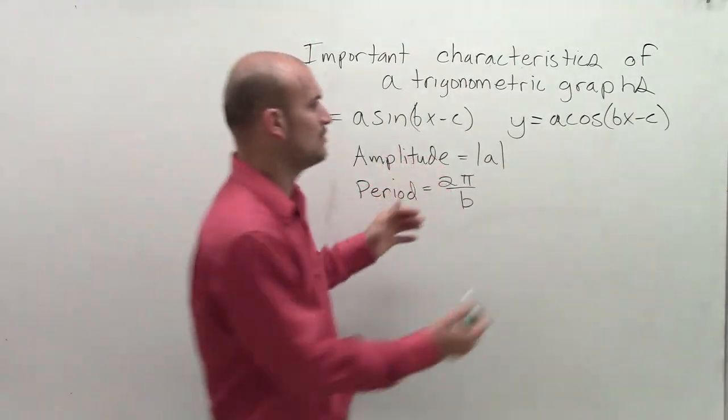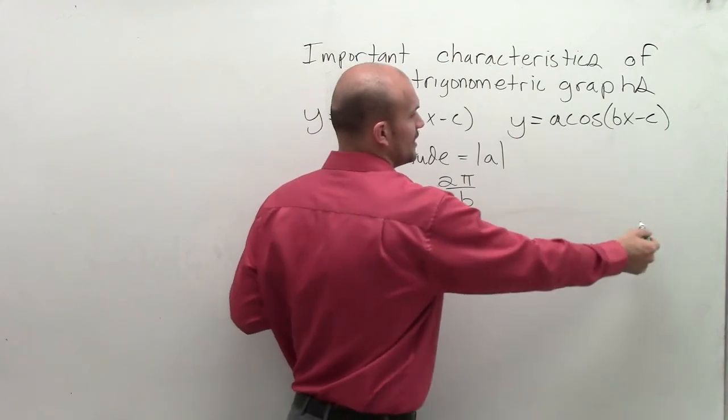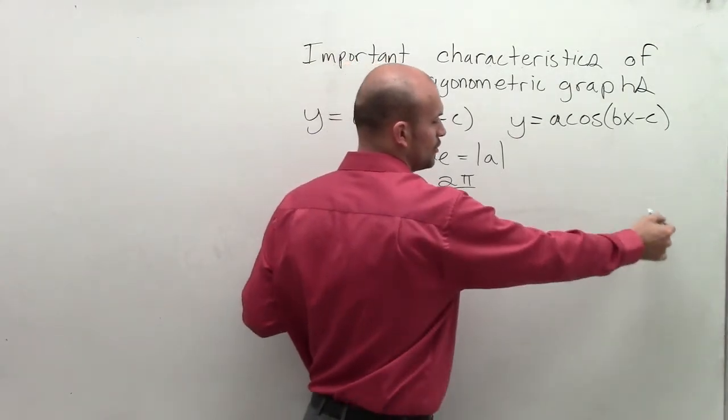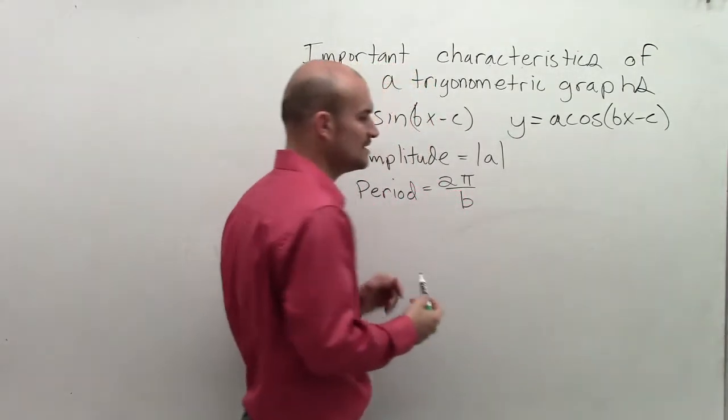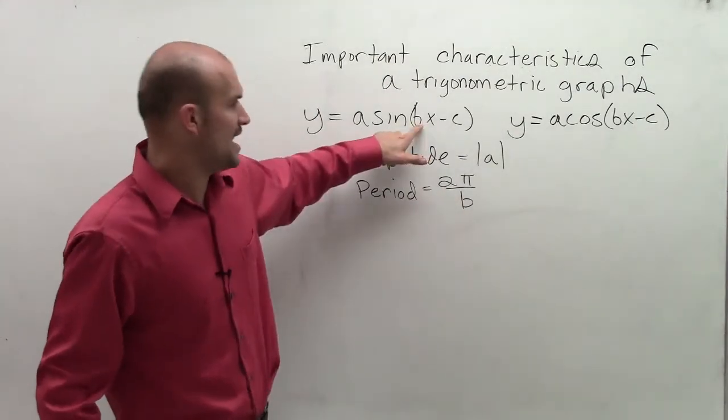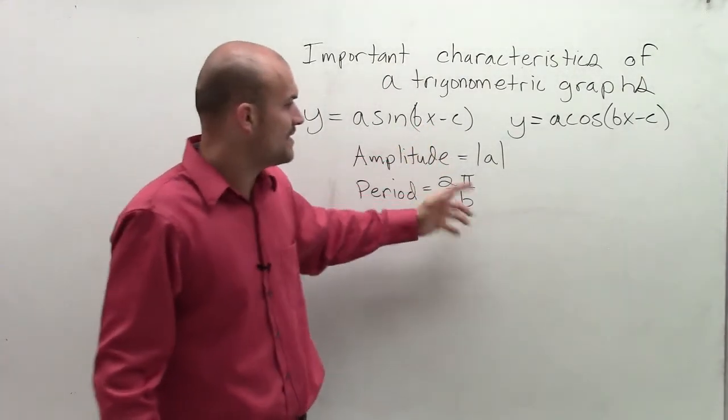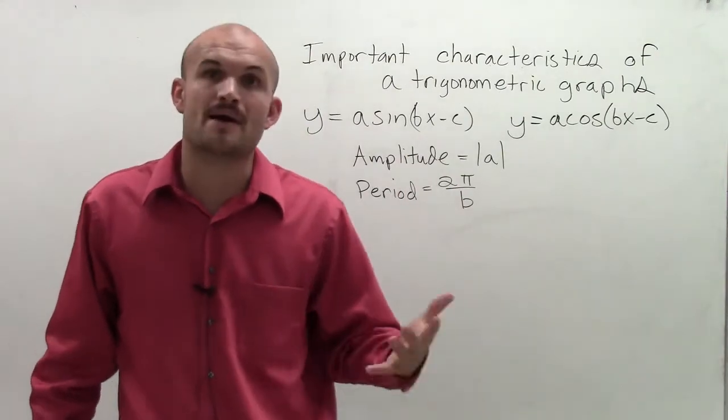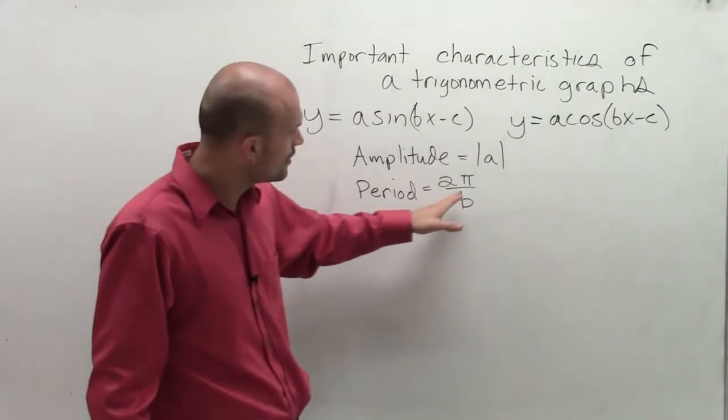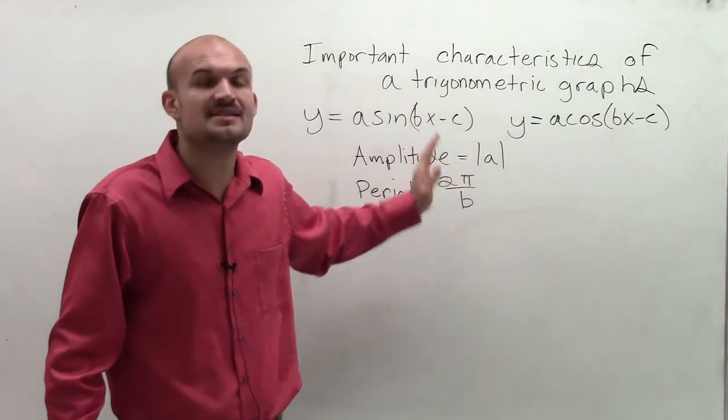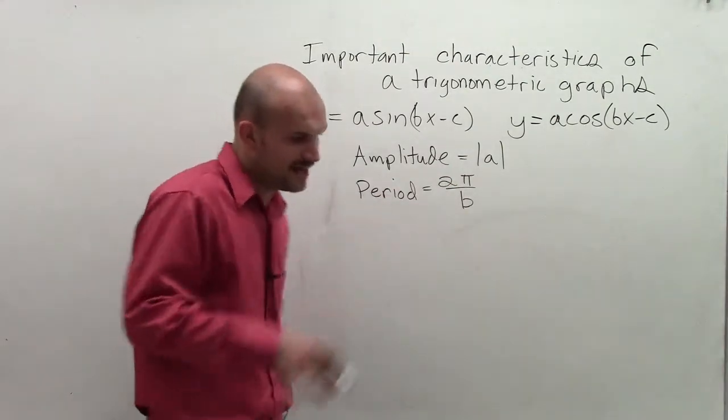And you can also kind of remember that. Well remember, if you go around the unit circle, all the way around the unit circle with all those angles is a distance of 2 pi. So if I have a number in front of my x, which is b, that is actually going to now affect my period by doing 2 pi and then dividing it by b.